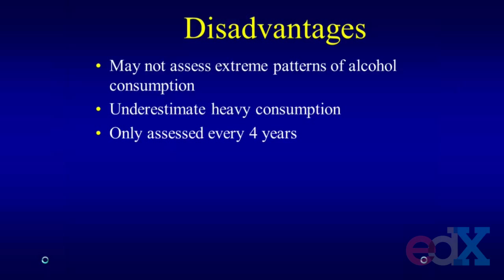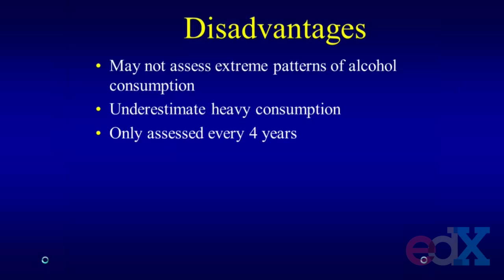Another disadvantage is that we only assessed alcohol every four years. Most people don't change their consumption that much, but a small percentage may dramatically increase or decrease depending on lifestyle changes or other illnesses. If people fluctuated a lot, that would tend to add only random error and bias results towards the null. The fact that we still found pretty strong inverse associations suggests this is unlikely to be too problematic in this particular population.